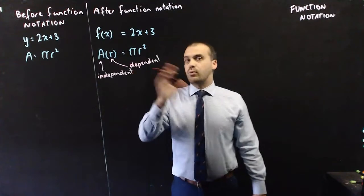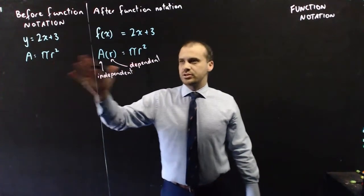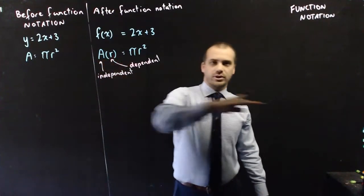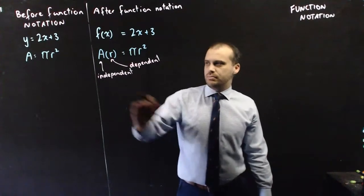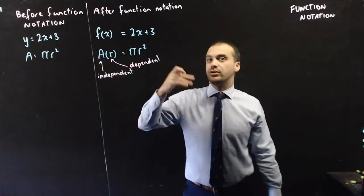So even though we don't have y's and x's in our equations, we know that r should go on the x-axis, and we know that area should go on the y-axis, because area depends on radius.